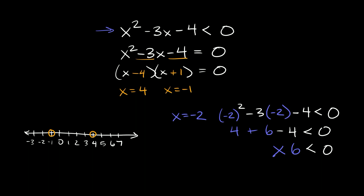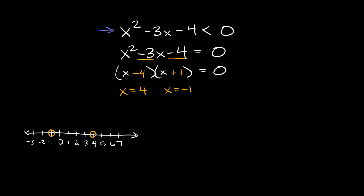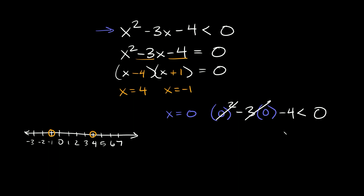Let's test one in the middle. An easy point is zero, so let's test x equals 0. Plugging in: 0 squared minus 3 times 0 minus 4 is less than 0. That simplifies to negative 4 is less than 0. Is that true? Yes, it is. So the middle region contains actual solutions to this inequality, and we're going to shade this middle portion.